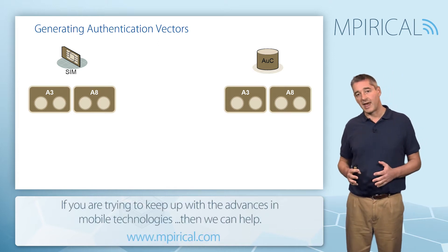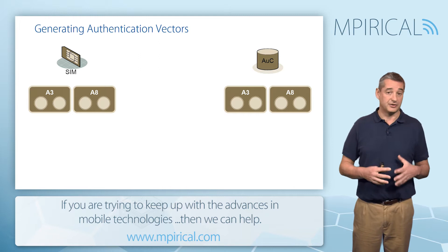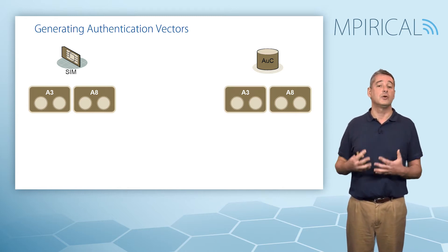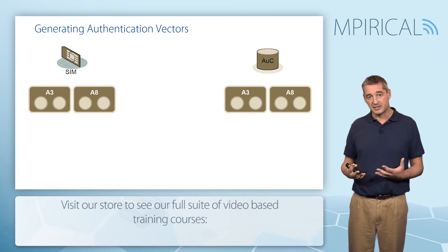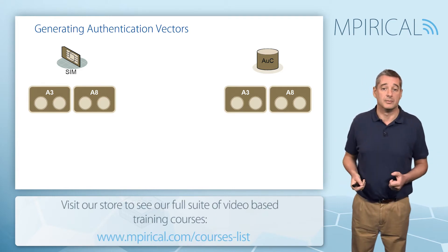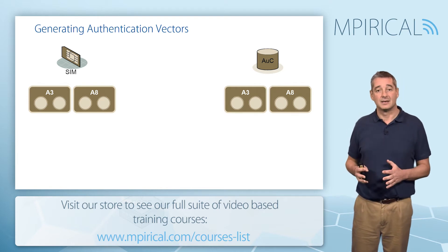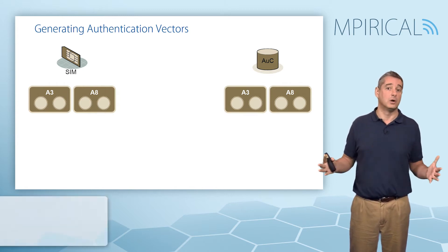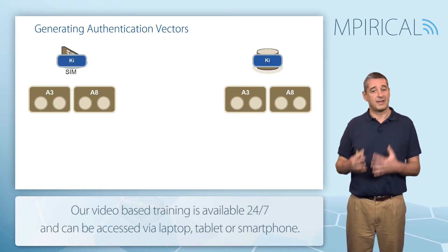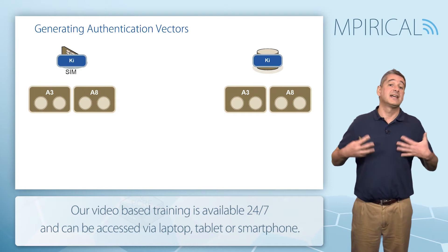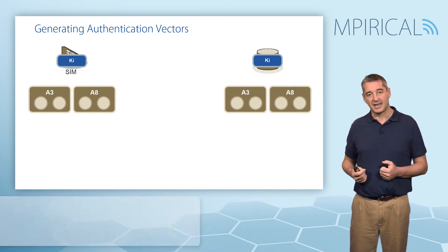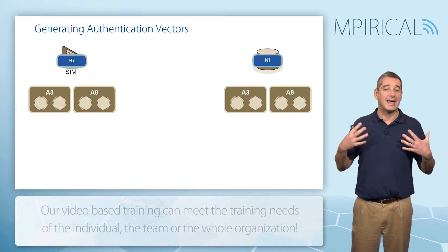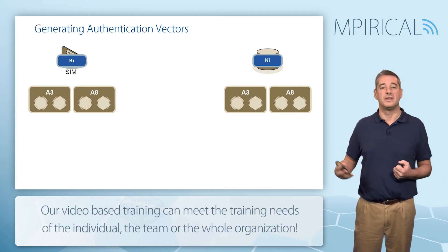The two key elements within our network dealing with security will be the SIM card — the subscriber identity module within the phone — and the authentication center, a security database associated with the home location register. Inside both of these devices are mathematical algorithms termed A3 and A8. These algorithms are secret and specific to a given service provider, so they are not the same the world over. Also located in both the authentication center and the SIM card is a secret number termed KI, the authentication key, which is specific to a given subscriber and remains hidden and locked on the SIM card and within the authentication center itself.